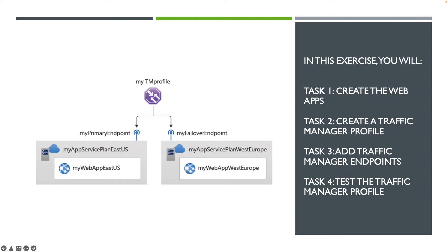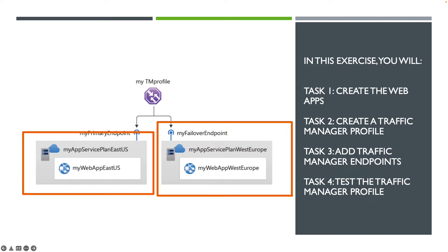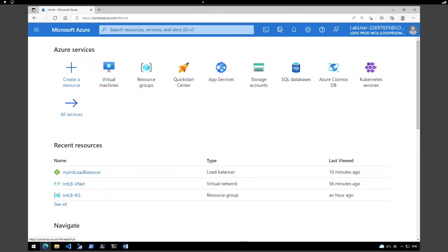In this exercise, we are going to create a traffic manager profile to deliver high availability for the company called Contoso Limited Organization's web application. We're going to create two instances of the web application and deploy them in two different regions — one in East US and another one in West Europe. The East US region will act as the primary endpoint and West Europe as the failover endpoint. The traffic manager profile will be based on endpoint priority to direct user traffic to the primary site. First step, let's go and create the web applications.